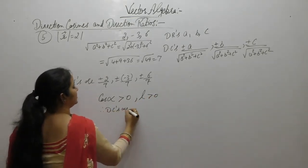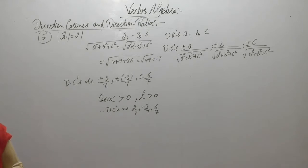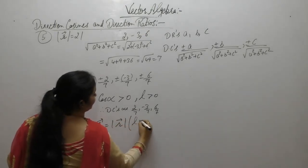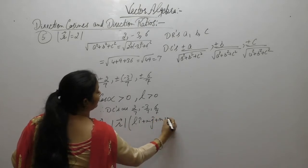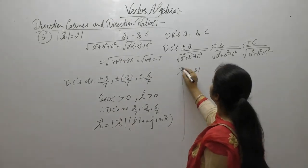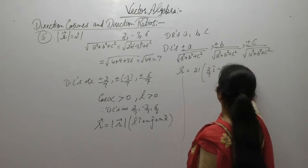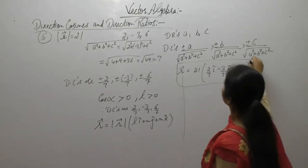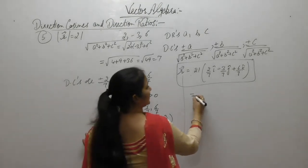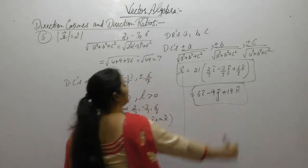Therefore direction cosines are 2/7, -3/7, 6/7. Since R makes an acute angle with the positive x-axis, cos(α) > 0, confirming the positive sign. Components of R = |R| (l·î + m·ĵ + n·k̂) = 21(2/7 î - 3/7 ĵ + 6/7 k̂) = 6î - 9ĵ + 18k̂.